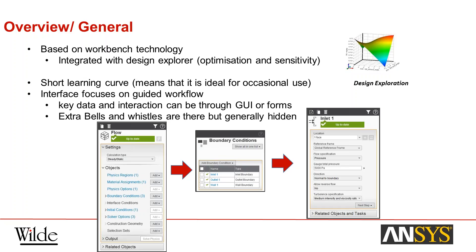AIM is based on Workbench technology and is integrated with Design Explorer and SpaceClaim. It's built to be easy to pick up and use, with a particularly short learning curve, making it ideal for very occasional use. The interface focuses on a guided workflow. Key data and interactions can be entered through the GUI or through forms — either by clicking on the appropriate part in the user interface, or by name selection through forms. More advanced functionality exists but is hidden behind filters, so it's there if you need it but won't overwhelm occasional users.